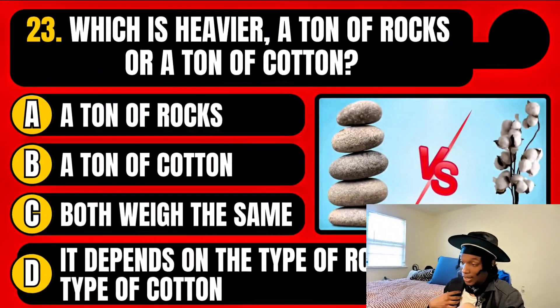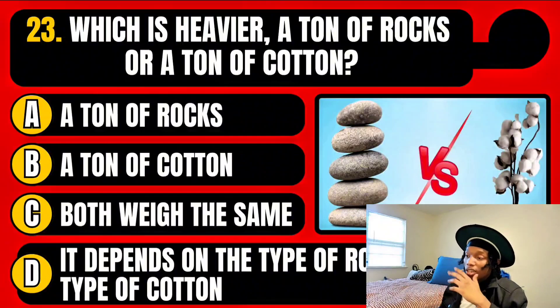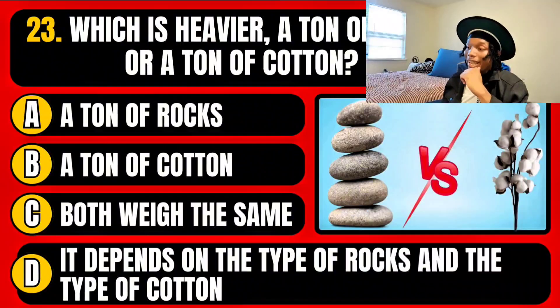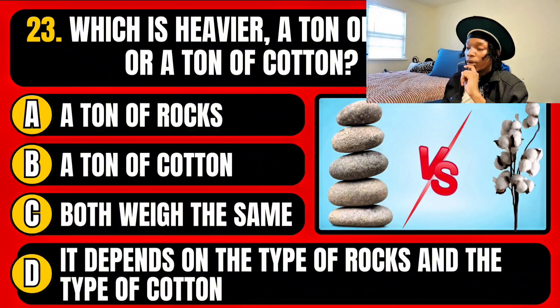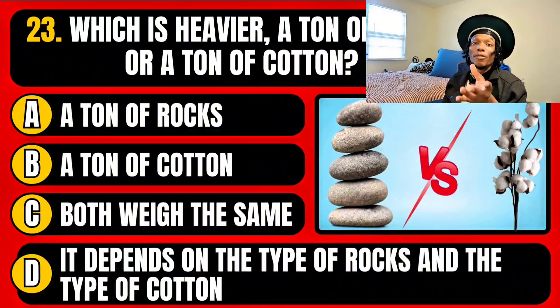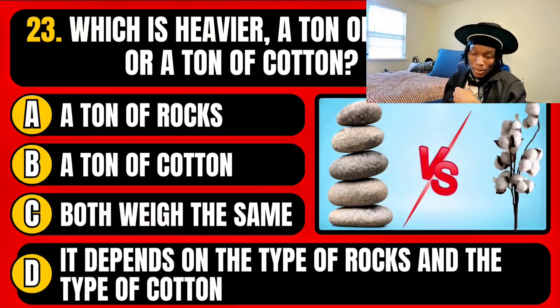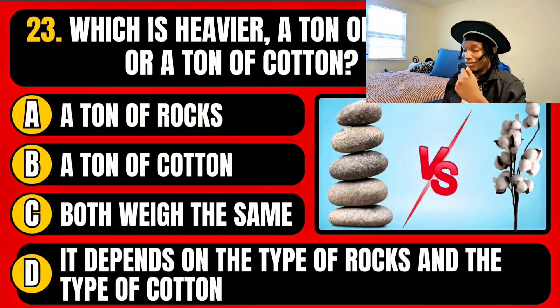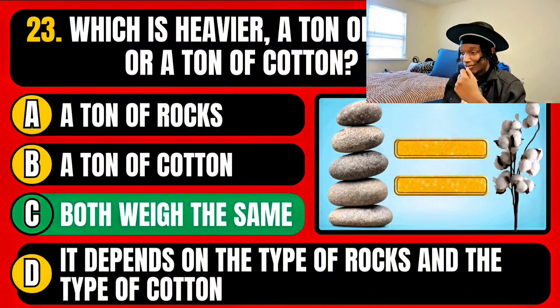Which is heavier — a ton of rocks or a ton of cotton? Both weigh the same. It depends on the type of rocks and the type of cotton. This question is clearly for those who are easily fooled by questions like these. They both weigh the same, obviously, because they are both a ton. I thought I was going to say something very stupid.